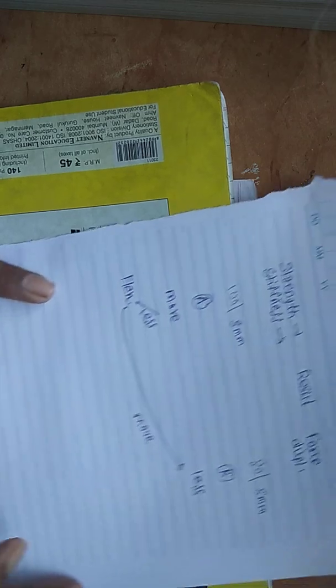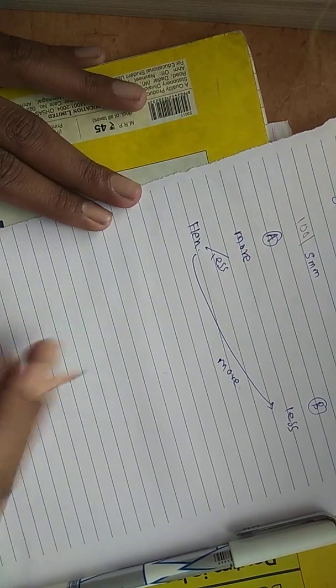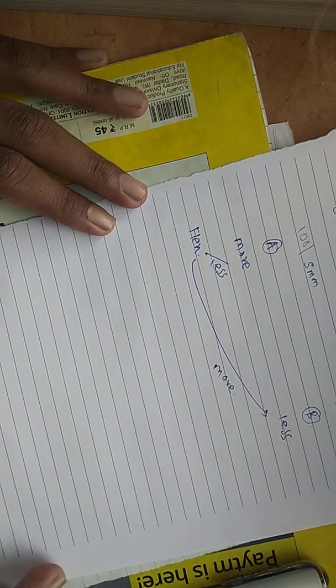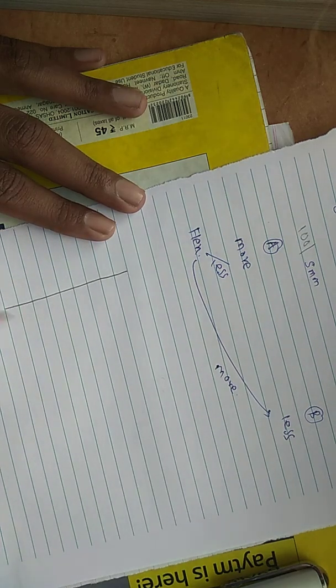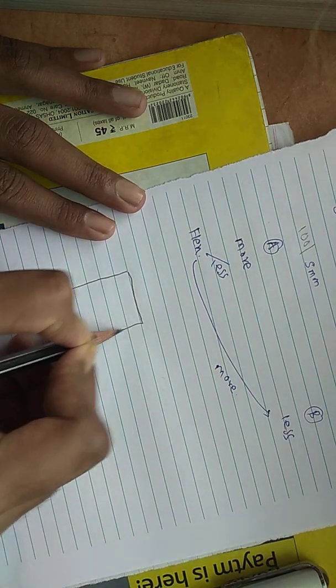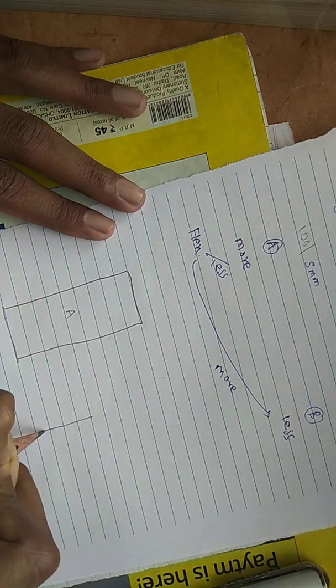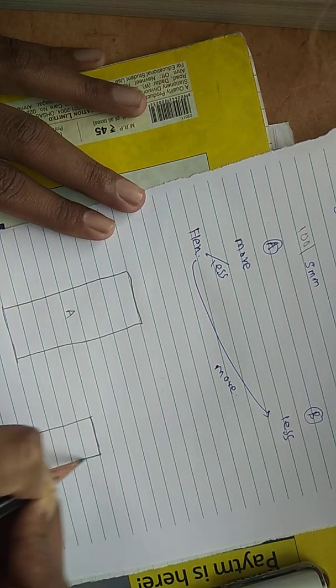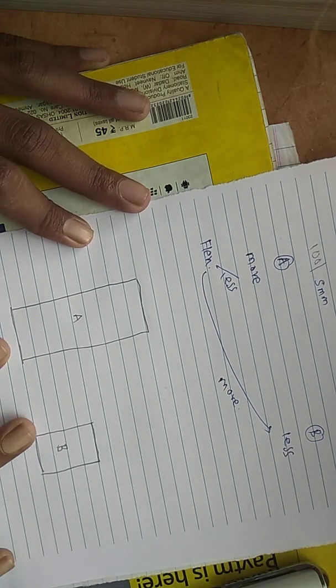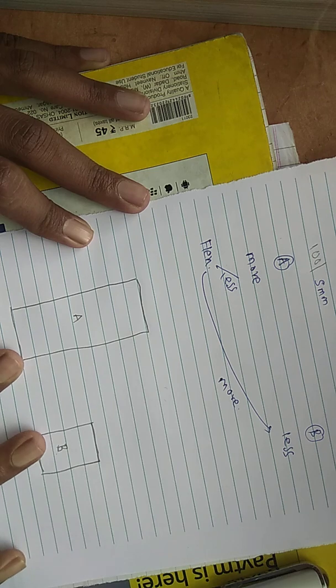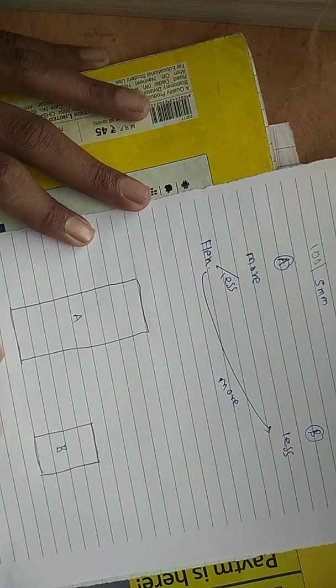Now I would like to ask you one question. Suppose if you have two buildings, tell me which building is more stiffer. Suppose this is building A and this is building B, then can you tell me which building is more stiffer or more flexible?